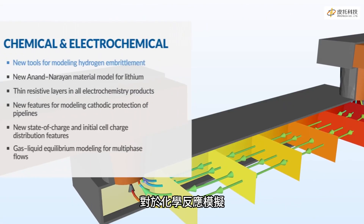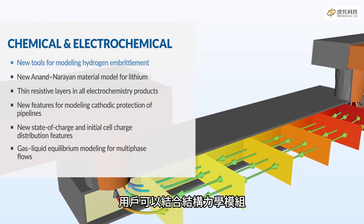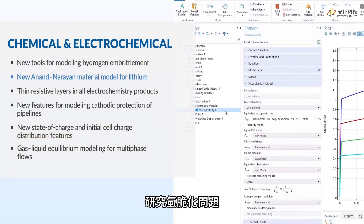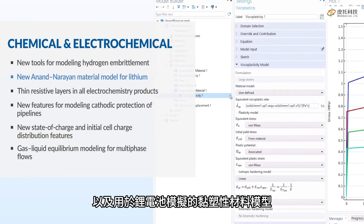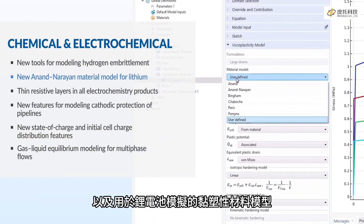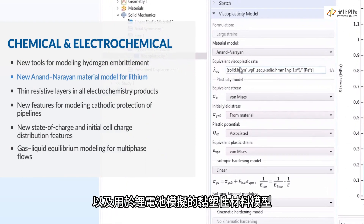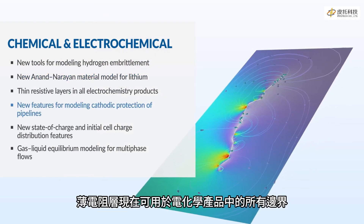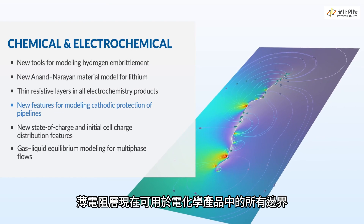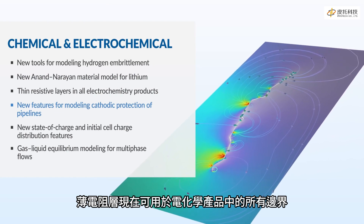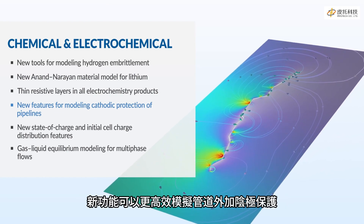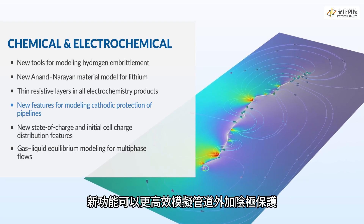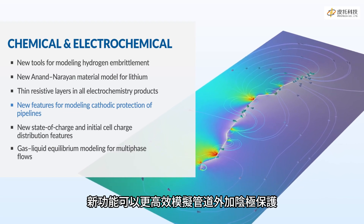For chemical reaction modeling, find new tools to perform hydrogen embrittlement simulations and a viscoplastic material model tailored for lithium battery applications when combining with the structural mechanics module. Thin resistive layers are now available for all boundaries in the electrochemistry products, and new features enable more efficient modeling of impressed cathodic protection of pipelines.